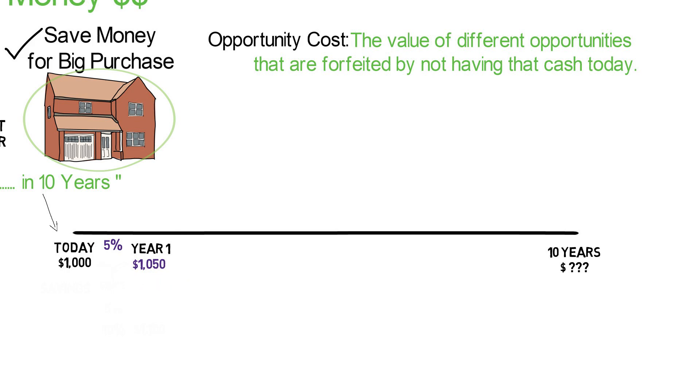So, now let's do the math, which is actually quite simple. So, if we continue our example. To get our $1,000 into the future, we simply need to increase that amount by our expected return. So, it's $1,000 times 1 plus R. R is the return. In our case, we're expecting a 5% return. So, $1,000 times 1.05 equals $1,050.